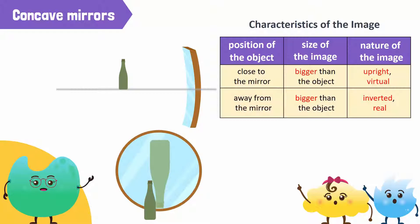This happens because the parallel light rays striking the concave mirror are reflected downwards. They converge at one point and the image appears inverted and in front of the mirror. Let's move this bottle further away from the mirror.